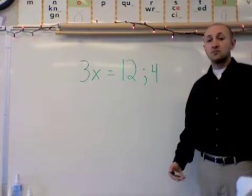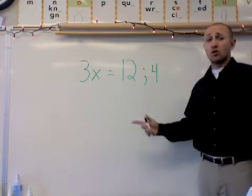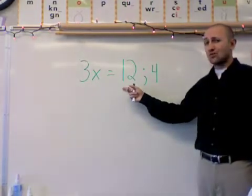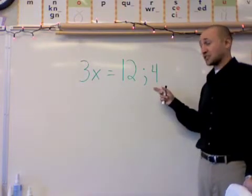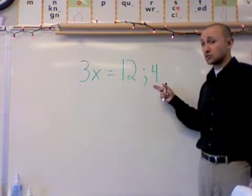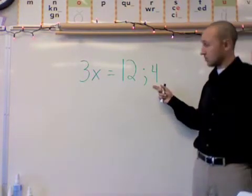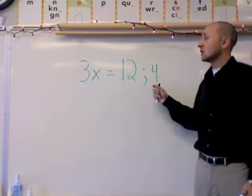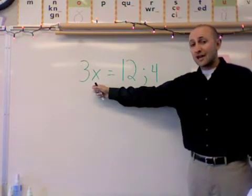So the next step is solution or not a solution. We'll look this way. 3 times x is equal to 12. And now what the semicolon means is they're asking is 4 a solution or not a solution to this problem. So basically I'm going to take this 4, the number that comes after the semicolon, and I'm going to replace the x with it.